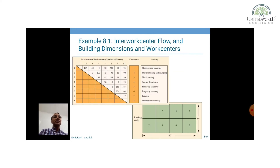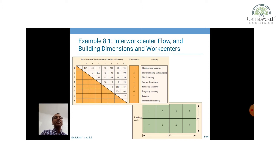The data given includes internal workflow, work centre flow, and building dimensions. There are 8 different departments: shipping and receiving, plastic moulding and stamping, metal forming, sewing, small toy assembly, large toy assembly, painting, and mechanism assembly. What you see in the matrix is the interdepartmental flow — the amount of interaction between departments. For example, department 1 has interaction with department 2 almost 175 times a year. This is the yearly inter-work-centre flow network, and on the basis of this you have to find the cost matrix — what will be the total cost involved.